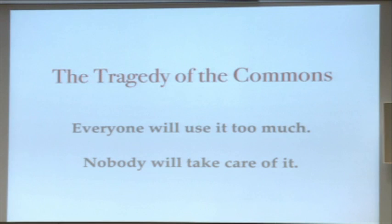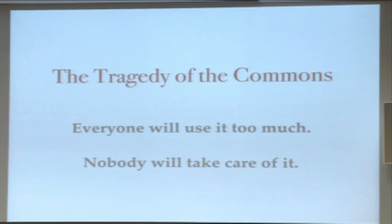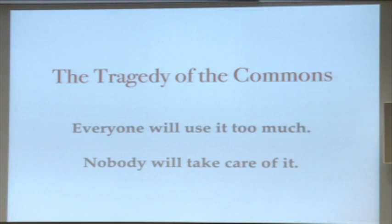Modern intellectual property rights are based on this understanding. In the United States and many other countries, copyright and patent laws are based upon the idea that unless something can be held as property, unless it can be owned by an individual, nobody will produce it and nobody will take care of it. In fact, in the United States, we are so sure that you have to give people monopoly rights for creative works that we make sure those monopoly rights pass not only through the person's life but onto their heirs' lives.